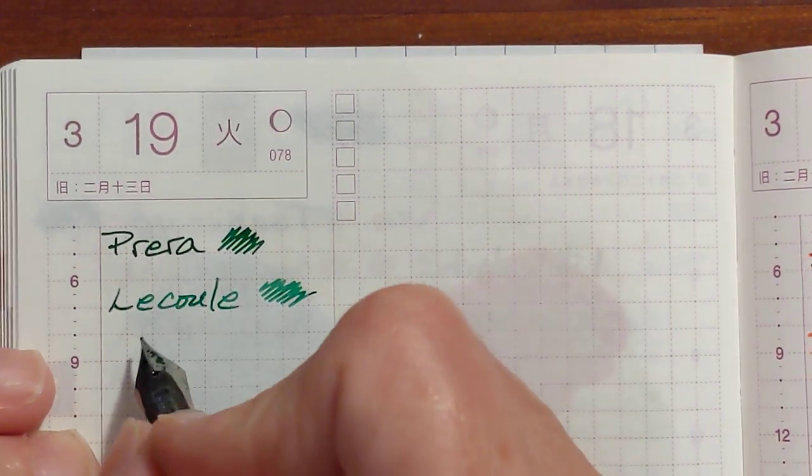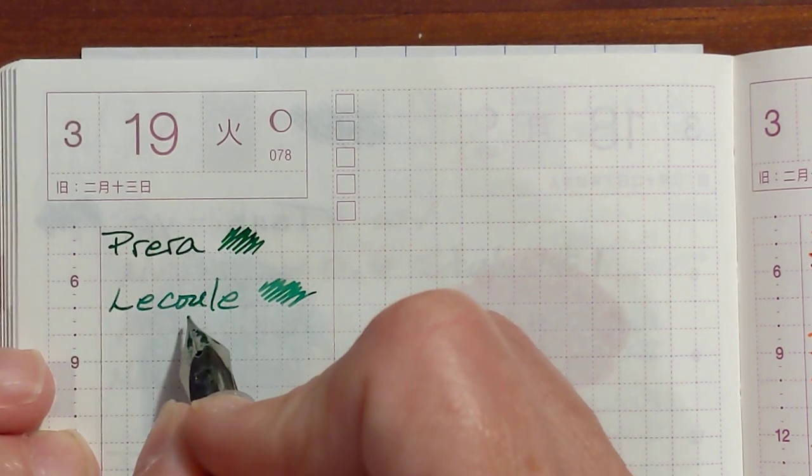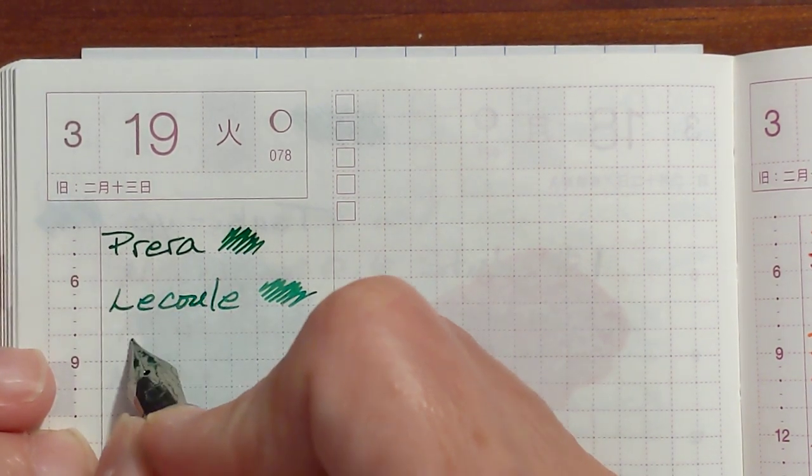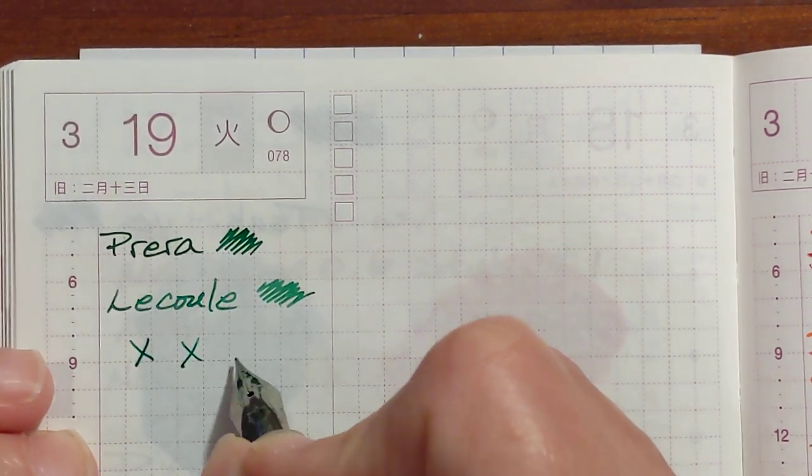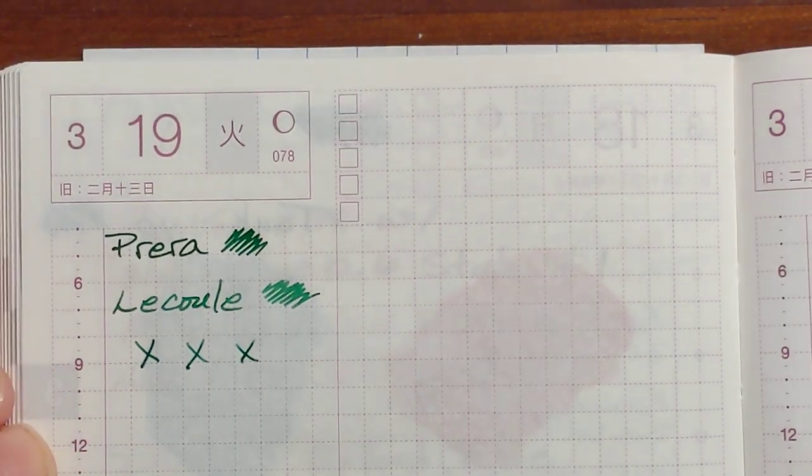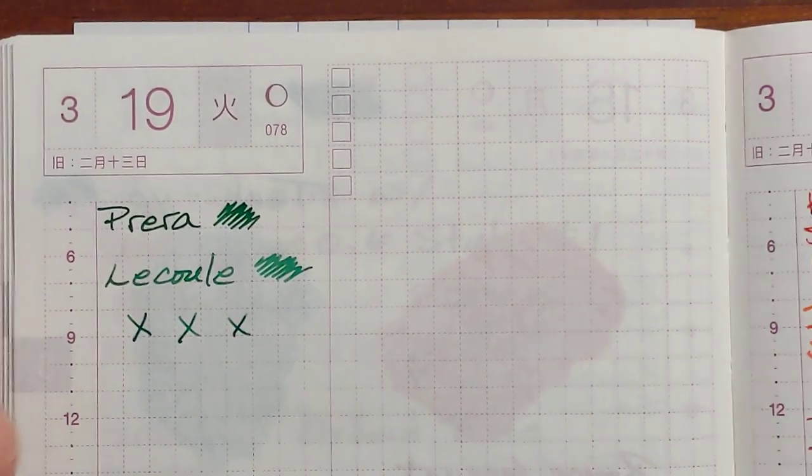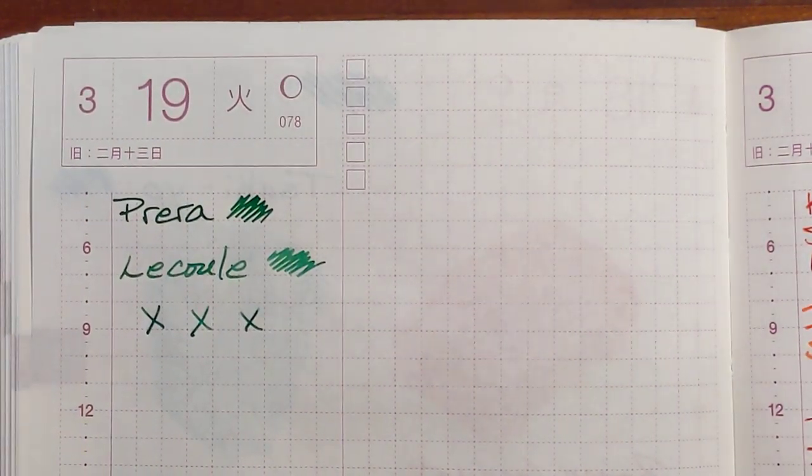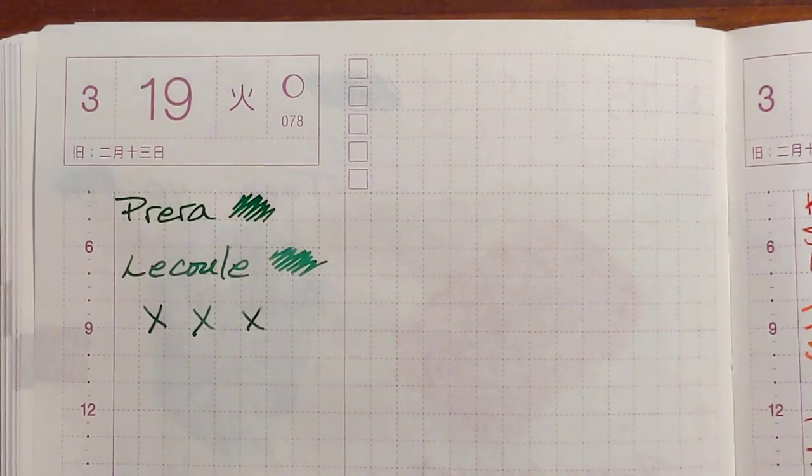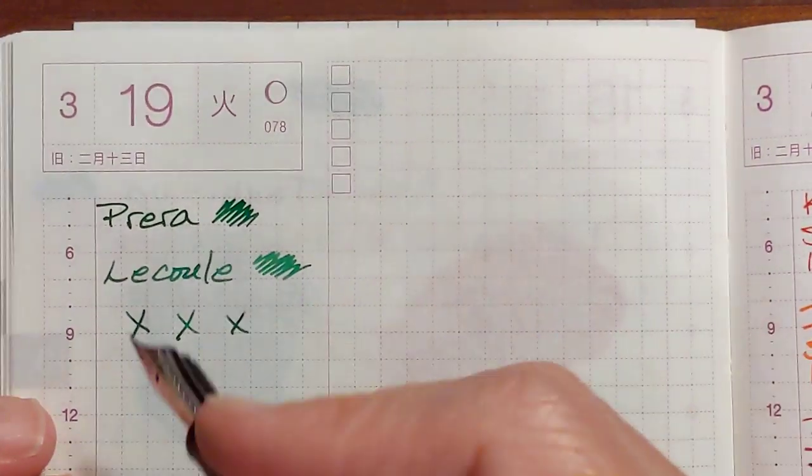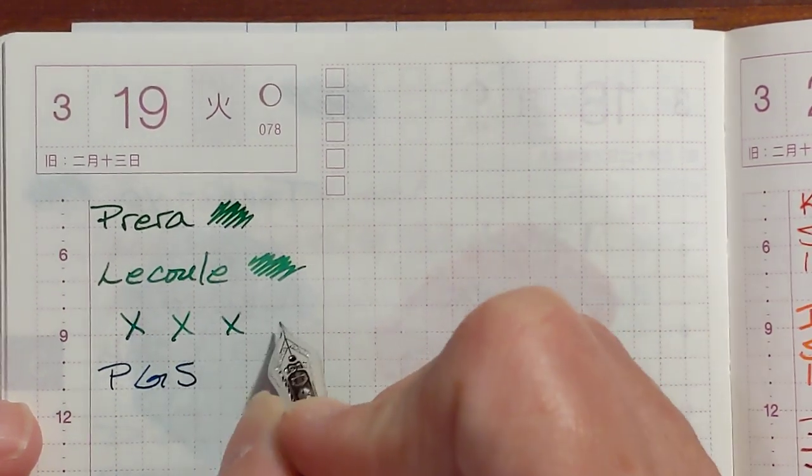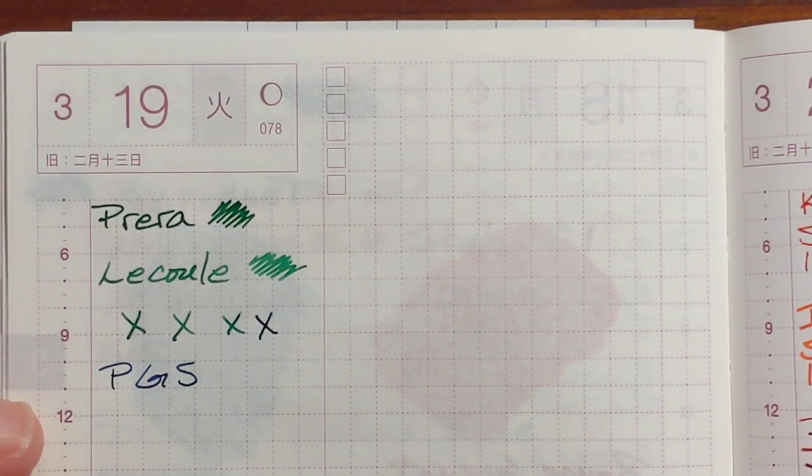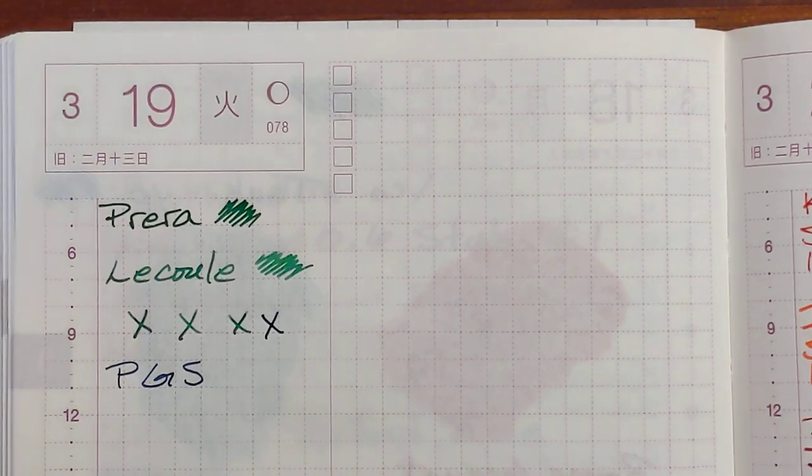And I didn't mention, this is considered a medium fine nib. So it's a pretty fine nib. I've got the Pro Gear Slim fine. Let's compare that real quick. Pro Gear Slim. Yeah, it might be a little noticeably finer.